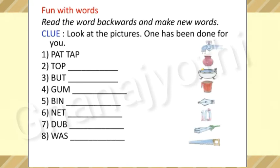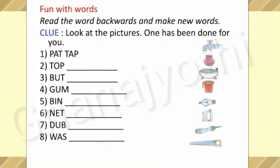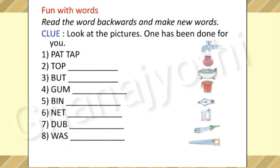Read the word backwards and make new words. Look at the picture — one has been done for you. First one: P-A-D, 'pad' — read backwards gives T-A-B, 'bat.' We need to read the word backwards to get a new word. Second one: T-O-P, 'top' — read backwards: T-O-P gives P-O-T, 'pot.'